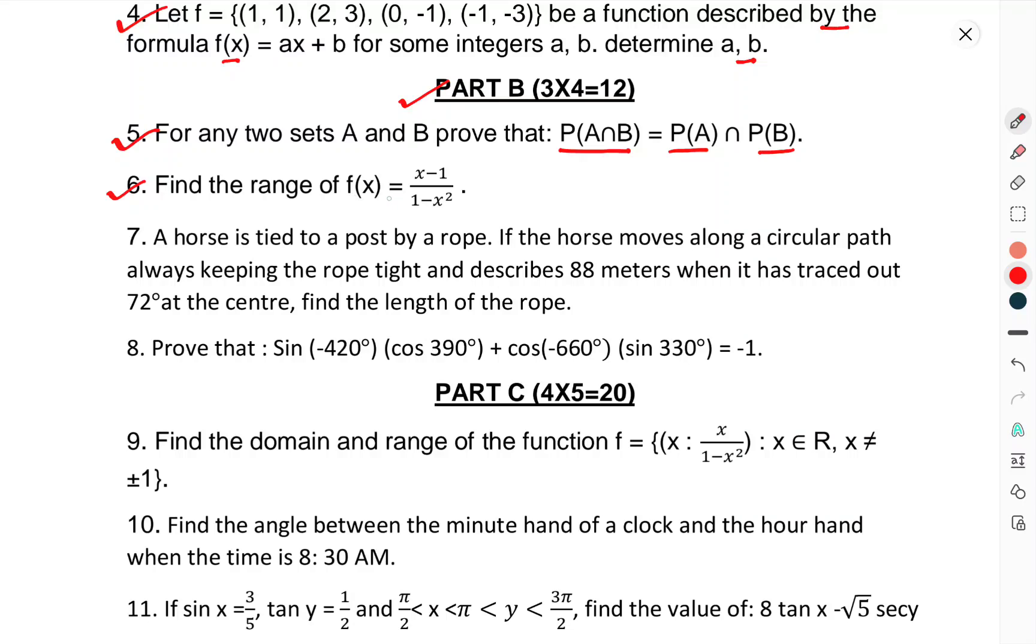Question 6: Find the range of f(x) = (x-1)/(1-x²). Question 7: A horse is tied to a post by a rope. If the horse moves along a circular path, always keeping the rope tight and describes 88 meters when it has traced 72° at the center, find the length of the rope.